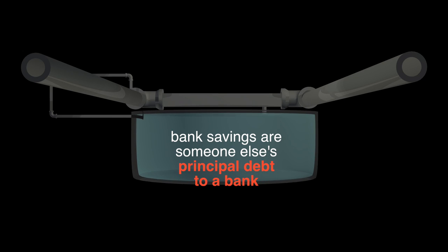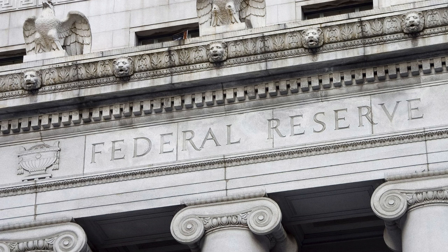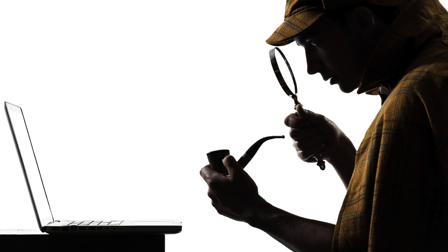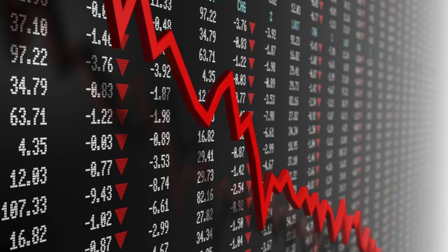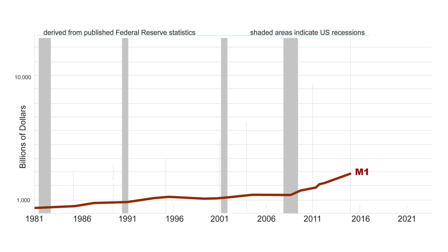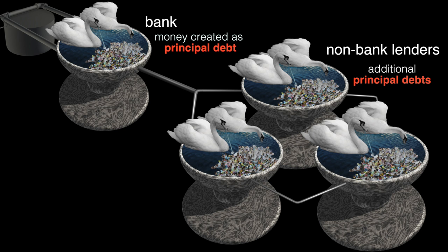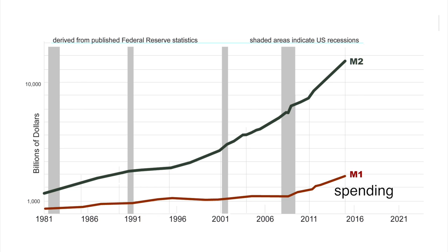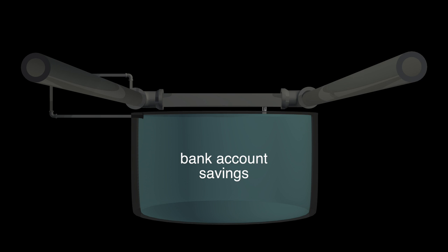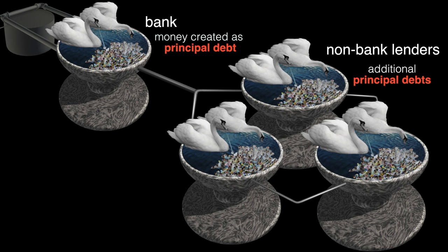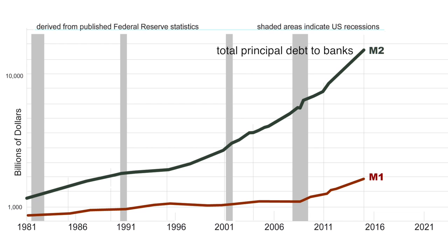Once we understand the model properly, we can accurately interpret the real-world evidence provided by the Federal Reserve. Here is a chart over time of M1 in the USA, defined as checking and cash in the hands of the public — in our model, it is the water potentially available to be earned by the public in the pond. Here is M2, which is M1 plus bank account savings; savings are the water in the storage tank. Therefore, M2 is analogous to the total water in our circulating system. It is a harmless image if you only see money as water, a positive thing. If you see it accurately as someone's principal debt to a bank on a schedule — a negative thing — then M2 is total principal debt to banks, a big hole, and M1 is the small portion of money potentially available to fill it at any given time.